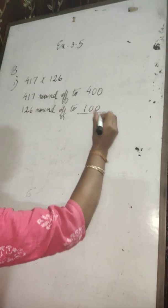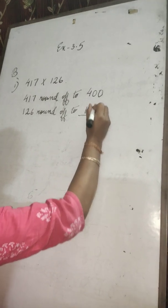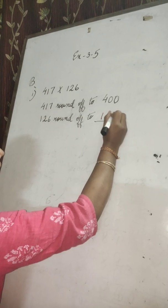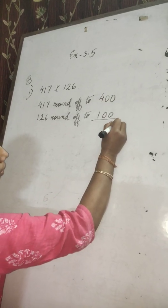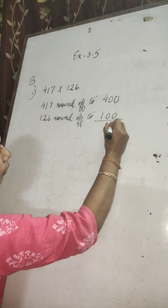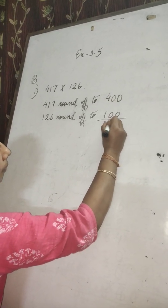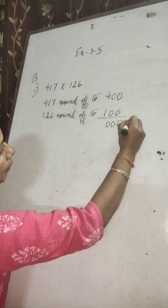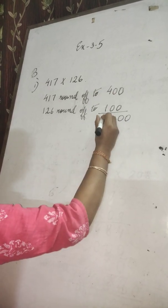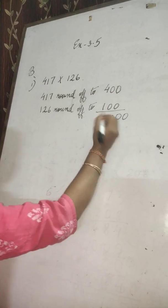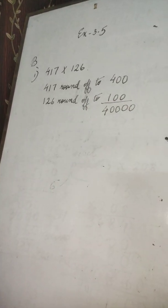Now find the estimated product. How many zeros? 1, 2, 3, 4 zeros. Write 4 zeros. Now write 1 times 4 is 4. This is the estimated product: 40,000.